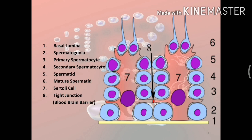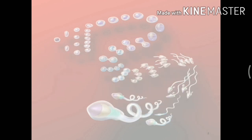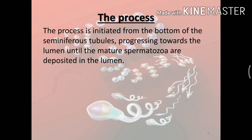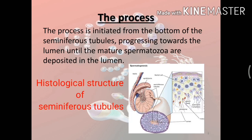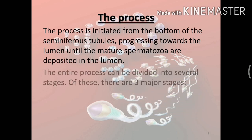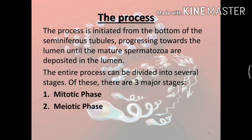Tight junctions, also known as the blood-testis barrier, we will come across later. Up next is the process of spermatogenesis. The process is initiated from the bottom of the seminiferous tubules, progressing towards the lumen until the mature spermatozoa are deposited in the lumen. The entire process can be divided into three major stages: the mitotic phase, the meiotic phase, and the differentiation phase.